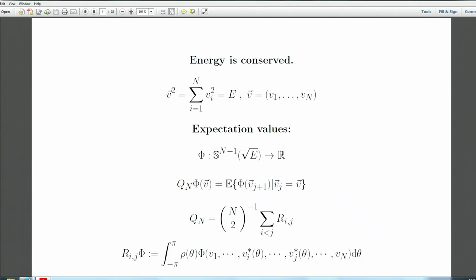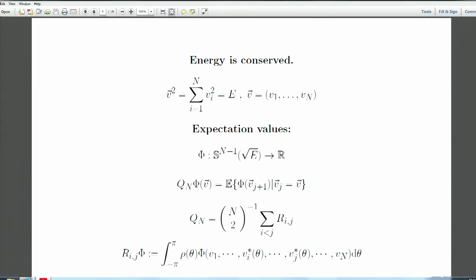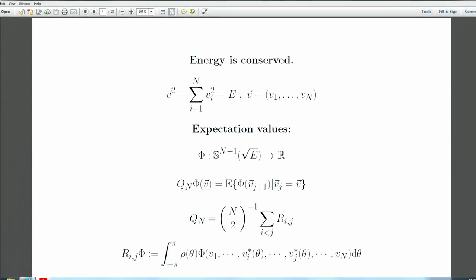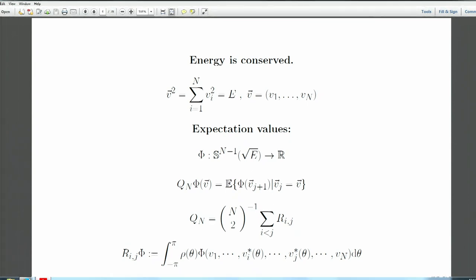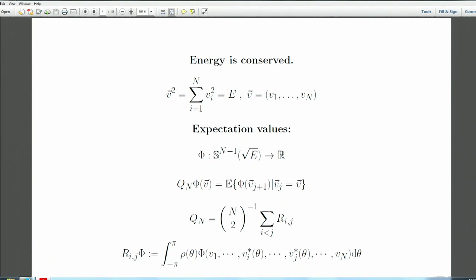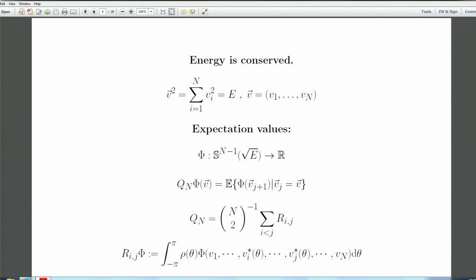The energy is conserved — I call this total energy E, with v² = E. In probability, what you can do is compute expectation values. We take a function φ from the sphere S^{n-1} with radius squared E — an n-1 dimensional sphere — to the reals.